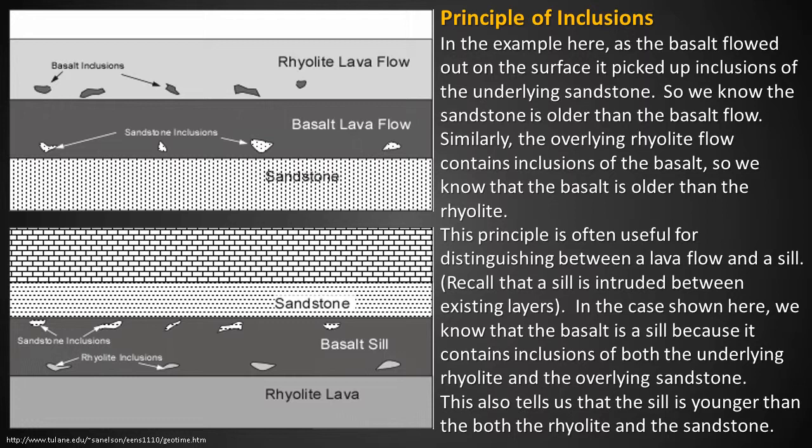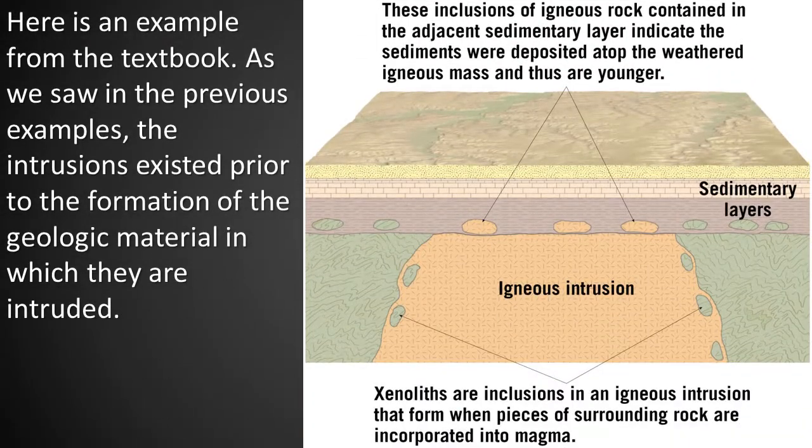This principle is often useful for distinguishing between a lava flow and a sill. Recall that a sill is intruded between existing layers, much like a dike, although a sill is horizontal and a dike is vertical. In this case, we know that the basalt is a sill because it contains inclusions of both the underlying rhyolite and the overlying sandstone. This also tells us that the sill is younger than both the rhyolite and the sandstone. Here is an example from the textbook showing that intrusions existed prior to the formation of the geologic material in which they are intruded.